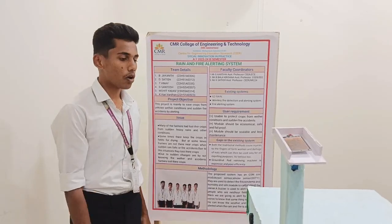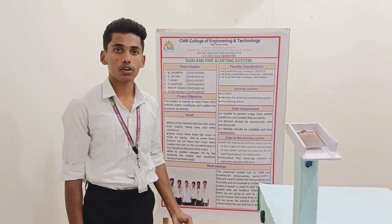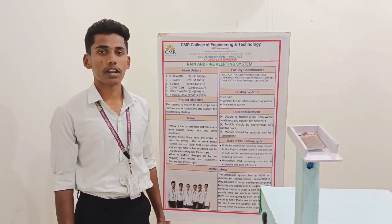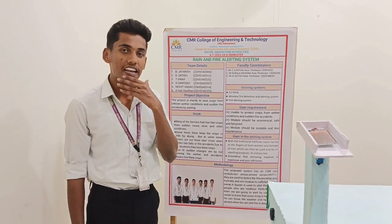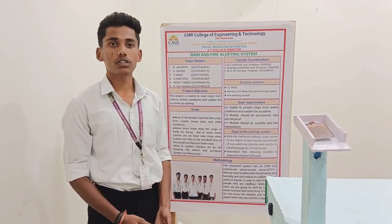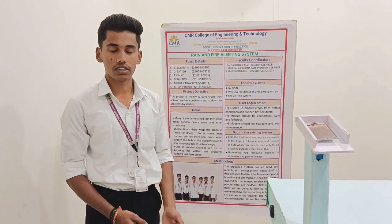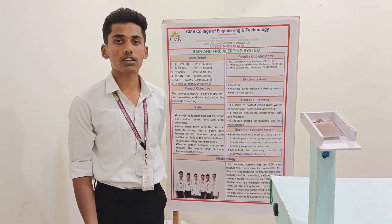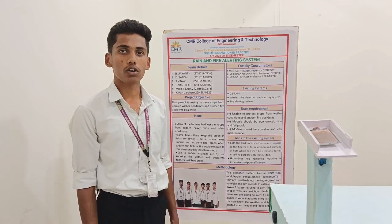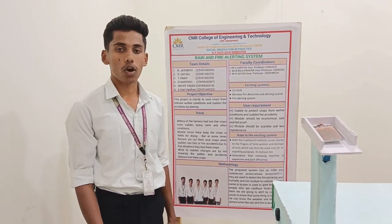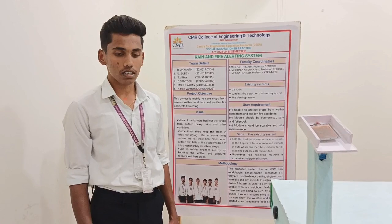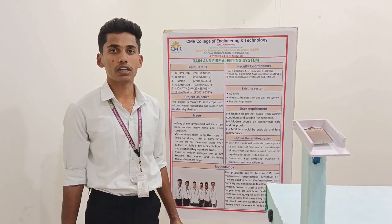We use components like DHT sensor, Arduino UNO, rain sensor, smoke sensor, SIM900A, resistors, and LED. The Arduino UNO records data in the device. The rain sensor and smoke sensor detect rain, fire, smoke, or gas and trigger a call or message to the owner of the field. The resistors divide power equally to all devices. The LED indicates device functioning.